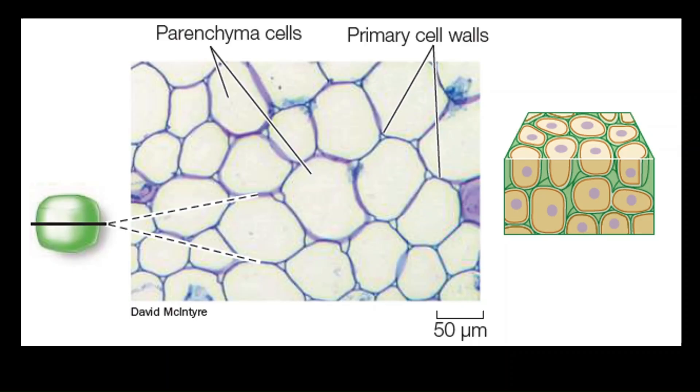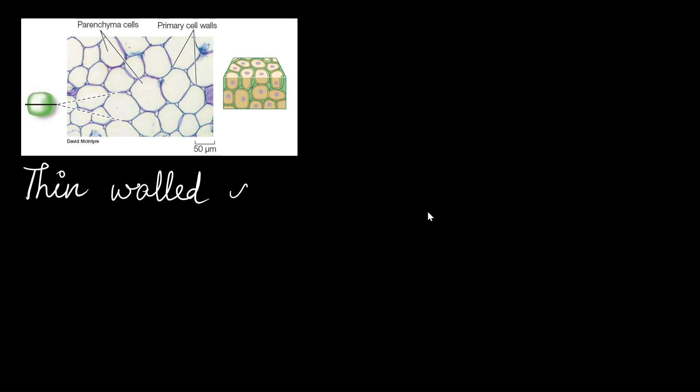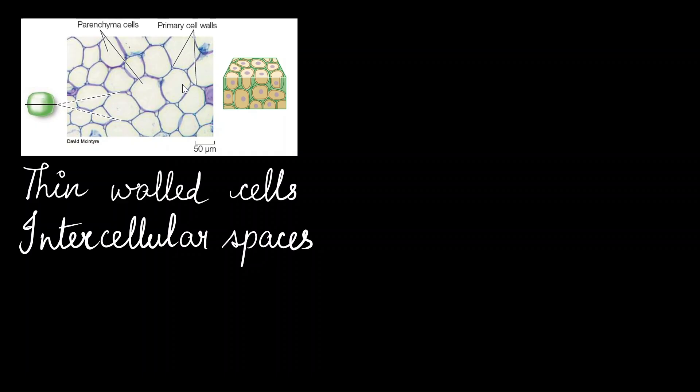Let's start with parenchyma cells. Parenchyma cells make up 90% of the tissue of herbaceous plants. They are also part of all plant systems. They have very thin walls and these cells are loosely packed. Therefore, they contain intercellular spaces. And you can notice that there is a large empty space sort of structure in the middle. And these are their extremely large central vacuoles.